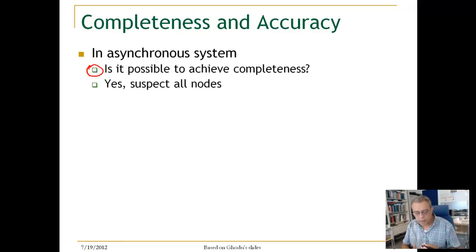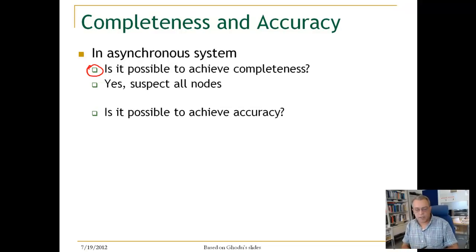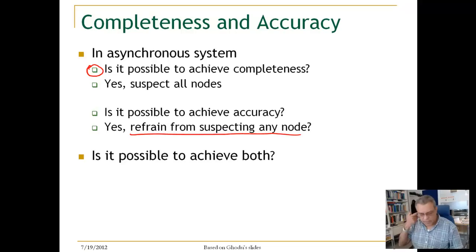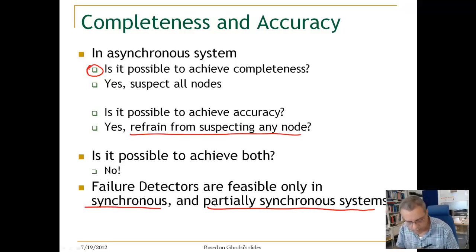One way to achieve completeness in an asynchronous system is to suspect that all nodes have crashed — if nodes have crashed, your suspicion will be correct. Is it possible to achieve accuracy in an asynchronous system? Yes, you can achieve accuracy by being quite lazy: you basically refrain from suspecting any node. But is it possible to achieve both in an asynchronous system? The answer is emphatically no.